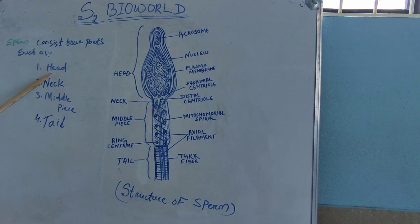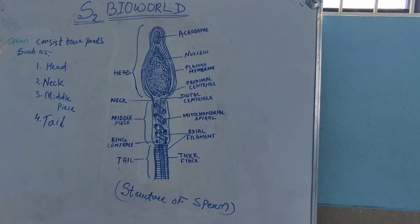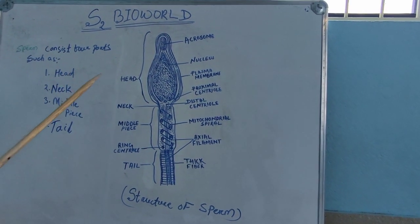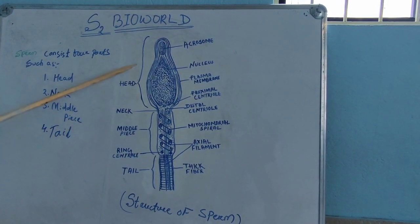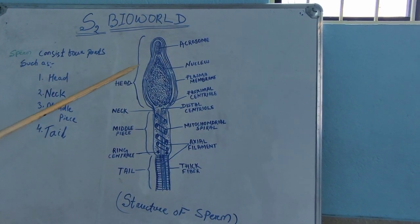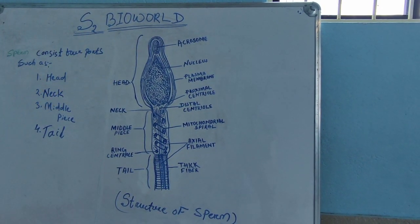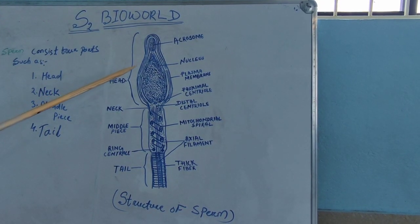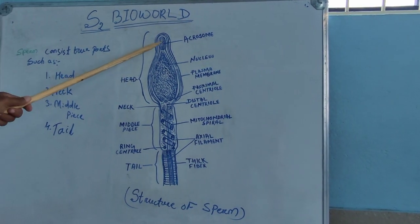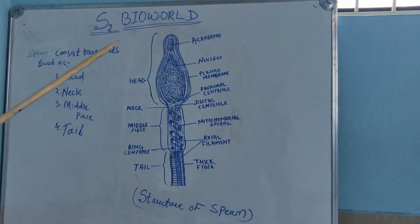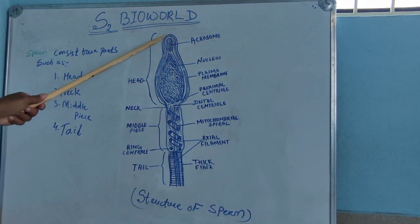The sperm consists of mainly four parts: head, neck, middle piece, and tail. First, the head part — it is the anterior-most part and is a flattened structure of the sperm, which mainly consists of two parts: the acrosome and the nucleus.